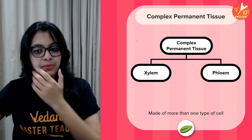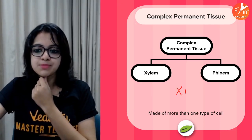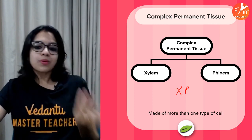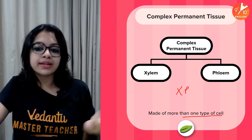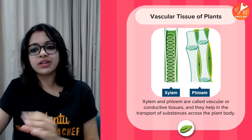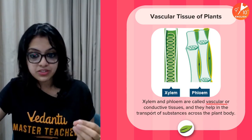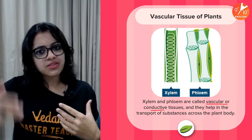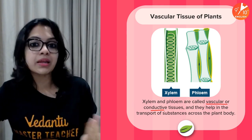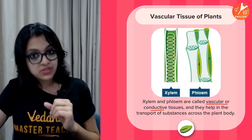Now coming to complex permanent tissue — XP — which are xylem and phloem. They are made up of more than one type of cell. We call them vascular tissues or conductive tissues; they act like the circulatory system in our body, helping in the transport of substances across the plant body.